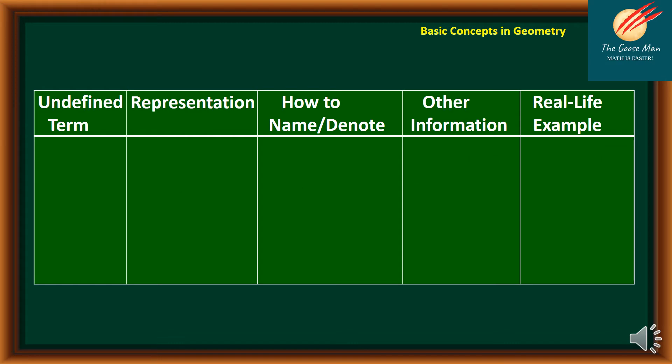The next undefined term that we will talk about is the line. For our representation, this is a straight mark with two arrowheads. So we have two arrowheads on opposite directions. So how to name this? If we have this symbol, it means this is actually read as line DE. If we are using two capital letters, however, we can name this with only one small letter. So we read this one as line n.